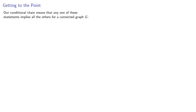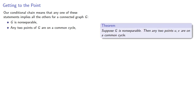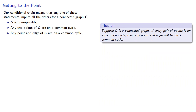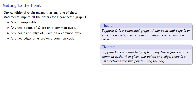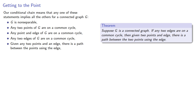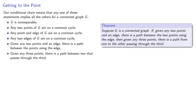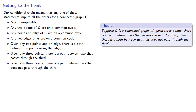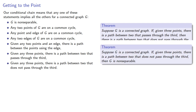Our conditional chain means that any one of these statements implies all the others for a connected graph g: g is non-separable, which tells us that any two points are on a common cycle, which tells us that any point and edge of g are on a common cycle, which tells us that any two edges are on a common cycle, which tells us that given two points and an edge there is a path between the points using the edge, which tells us that given any three points there is a path between two that passes through the third, which tells us that there is a path between two that does not pass through the third, which tells us that g is non-separable.